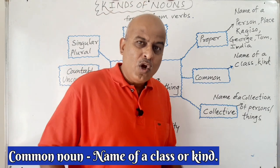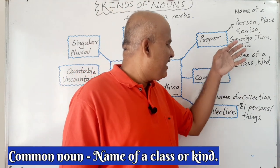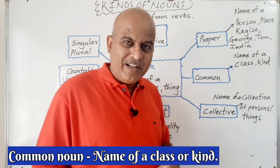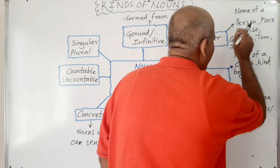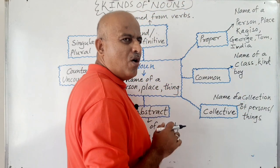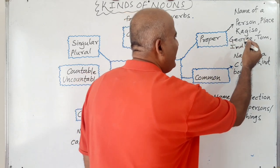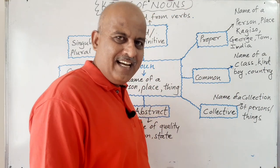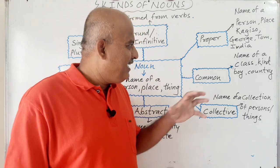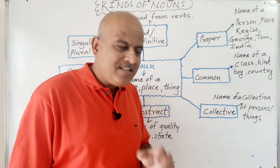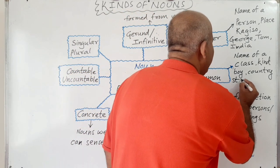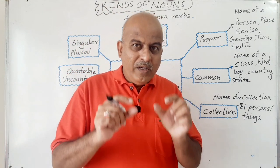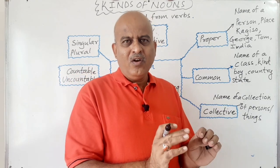Common nouns are the names given to a particular class or kind. Kagisu is a proper noun and boy is a common noun. India is a proper noun. If I say Maharashtra, Maharashtra is a state — so 'state' is a common noun and 'Maharashtra' is a proper noun. Common noun is the name given to a particular class or particular kind.